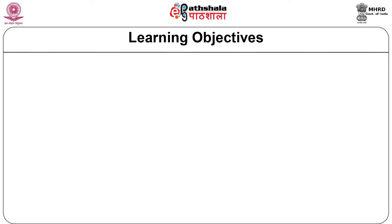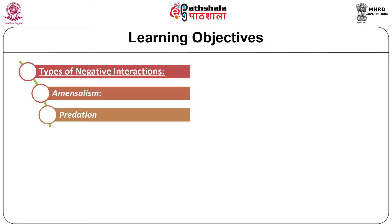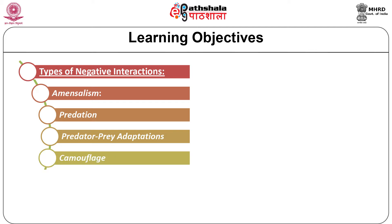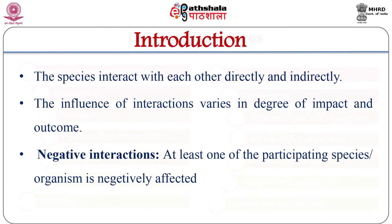In this module we are going to talk about negative interactions. The objectives of this module are: introduction to negative interaction, types of negative interaction, amensalism, predation, predator and prey adaptations, defensive coloration, camouflage, mimicry, predation and prey dynamics, herbivory, parasitism, and competition. Species interact with each other directly or indirectly, and the influence of these interactions varies in degree of impact and outcome. Species interactions form the basis for many ecosystem properties and processes such as nutrient cycling and food webs.